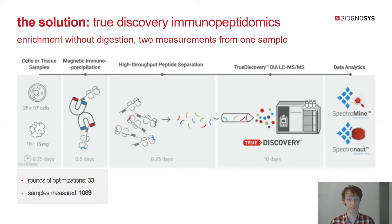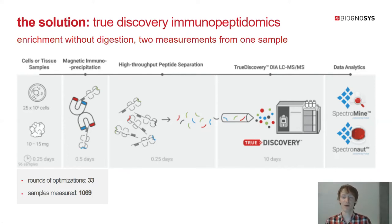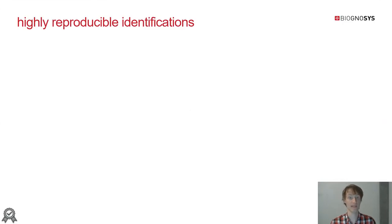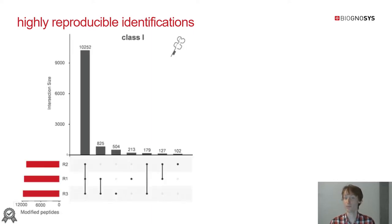Being such a complicated pipeline, we spent a lot of time optimizing it — more than 33 rounds of optimization and more than 1,000 samples measured, so we are really confident about our pipeline. To verify the quality, we processed triplicate JY cells using 20 million cells. These are B cells that express both class 1 and class 2 HLA molecules. We found more than 10,000 peptides across all three samples, demonstrating a really large number of peptides and very high reproducibility.